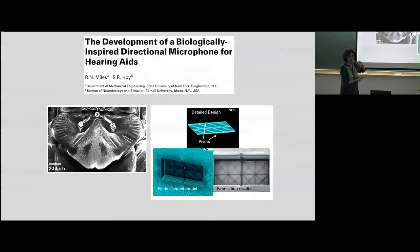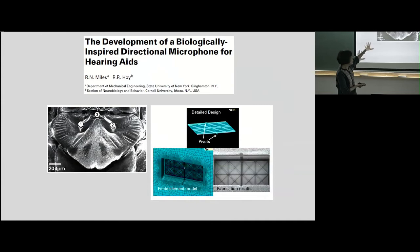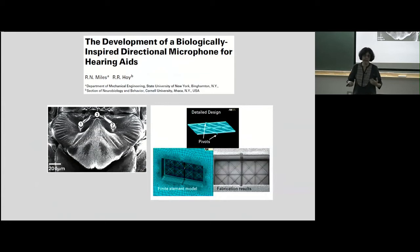This parasitoid fly has ears that are actually physically coupled together — as though you have both your ears on your neck but joined. This tiny coupled sensor is also directional, and there has been a lot of work on figuring out what creates directionality in this system. Indeed it's being used to try and make directional hearing aids.